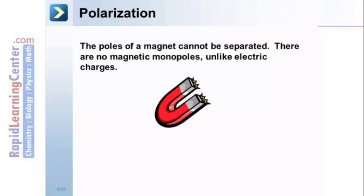Polarization. The poles of a magnet cannot be separated. There are no magnetic monopoles, unlike electric charges.